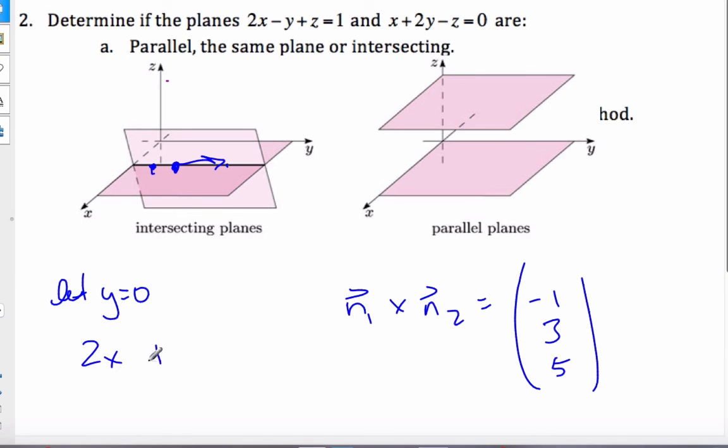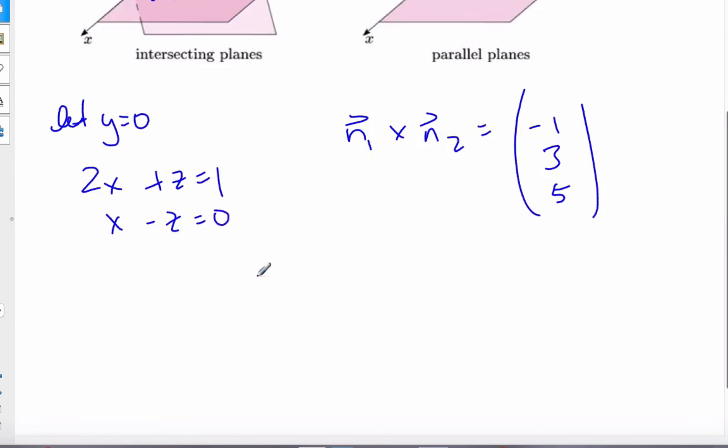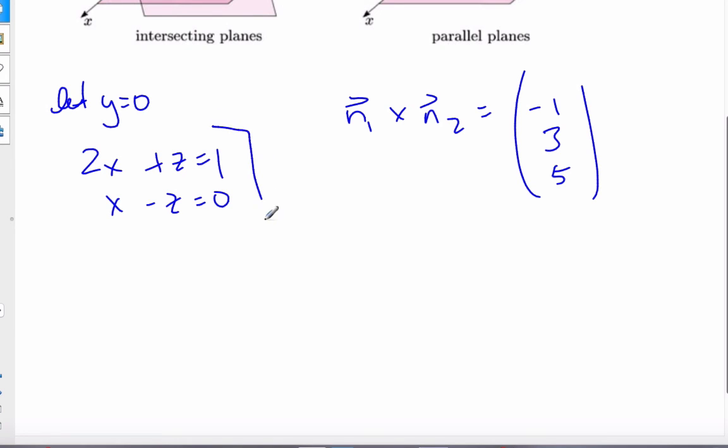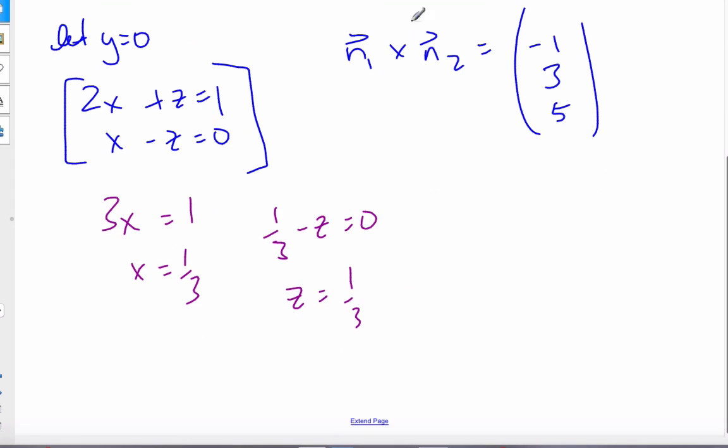If I plug in 0, I get 2x + z = 1 and x - z = 0. Now I have simultaneous equations with x and z. It's easy to add those up, and I get 3x = 1, so x = 1/3. I can also solve 1/3 - z = 0, so z is also equal to 1/3.